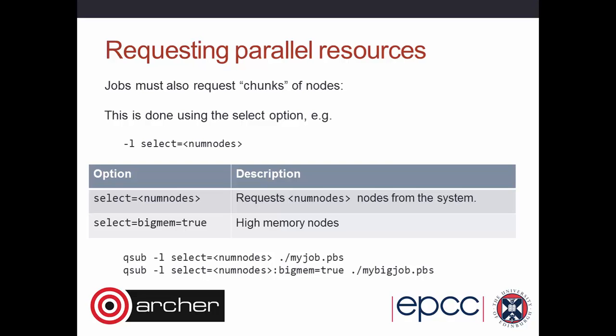The other select option you're likely to use is requesting high memory. A subset of Archer nodes has 128 gigabytes per node rather than 64. You add ':bigmem=true' — so '-l select=<num_nodes>:bigmem=true'. Without that, your job may run on standard or high memory nodes. With 'bigmem=true', it's guaranteed to run on the high memory nodes. There are up to two cabinets' worth of high memory nodes available.